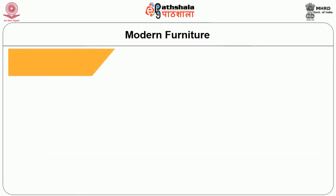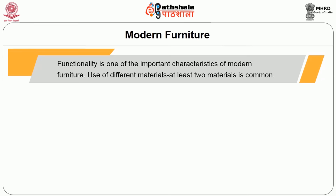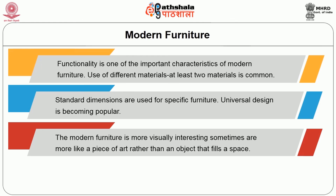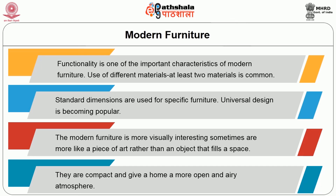Functionality is one of the important characteristics of modern furniture. Use of at least two different materials is common. Standard dimensions are used for specific furniture, and universal design is becoming popular. Modern furniture is more visually interesting — sometimes more like a piece of art rather than an object that merely fills the space. It is compact and gives a home a more open and airy atmosphere.